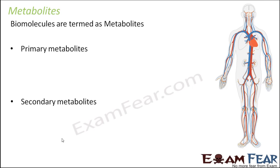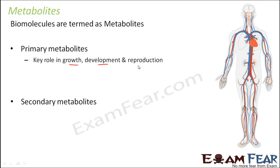Primary metabolites are those which play a key role in growth, development, and reproduction. They are called primary because they play a crucial role in the primary processes for the existence of a living organism. Living organisms are capable of growing, reproducing, and sustaining themselves — these are the basic characteristics of a living organism — and primary metabolites play the most important role in all these processes.